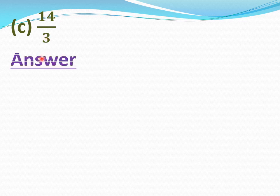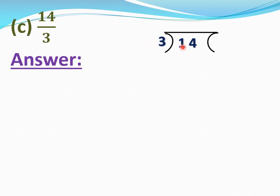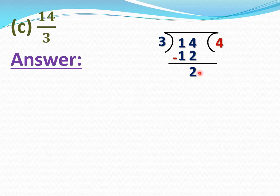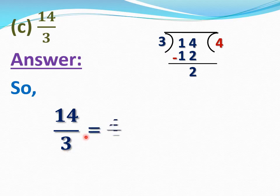Now see part, 14 by 3. We have to change 14 by 3 into a mixed fraction. First divide 14 by 3. 3 multiply 4 equal 12; subtraction gives remainder 2. Hence quotient is 4, remainder is 2, and divisor is 3. Write quotient as whole number, remainder as numerator, and divisor as denominator. So 14 by 3 equal 4 whole 2 by 3.